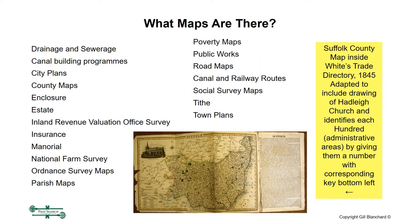Starting off, I'll just give you a very quick summary of the different types of maps that are available. The image on this first slide is of a county map from Suffolk inside an 1845 Trade Directory — White's Trade Directory. Like many maps, this has been adapted by the publishers. It includes a drawing of the Church of Hadley in Suffolk, and the map has numbers on it identifying the different hundreds, which were administrative units. At the bottom left-hand side is a key telling you which of those hundreds were which. These are very important when looking for civil registration records, working out what areas people lived in, and where courts were held.